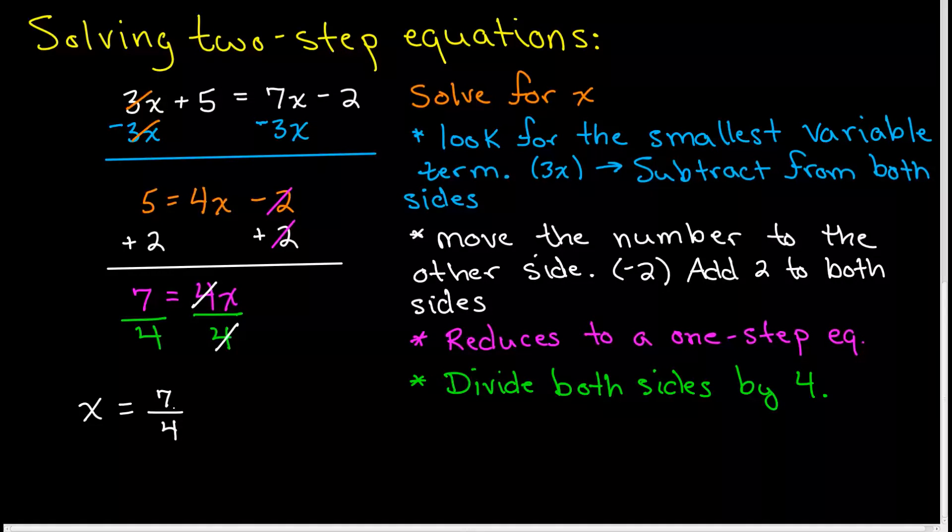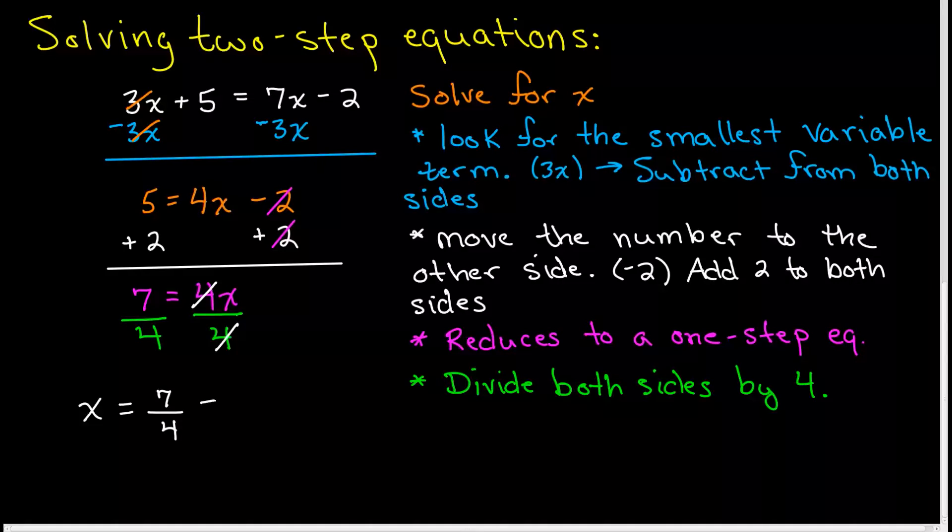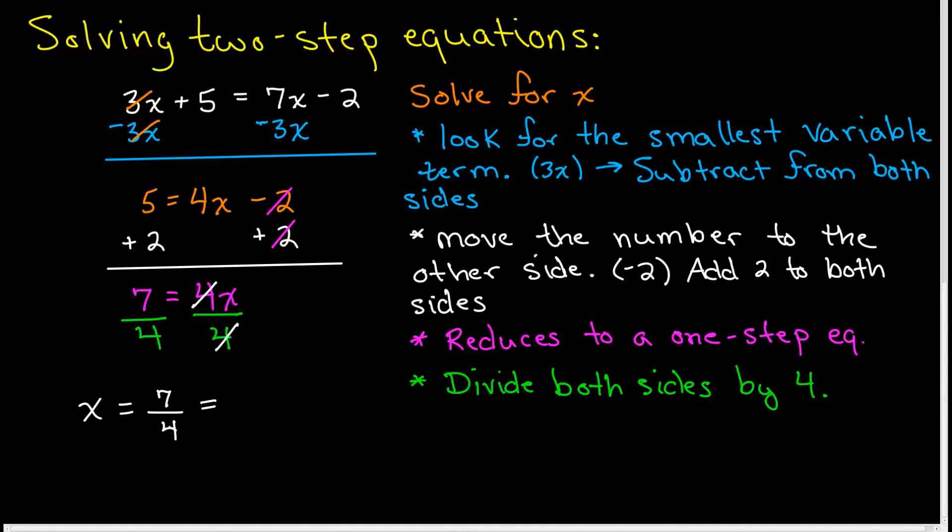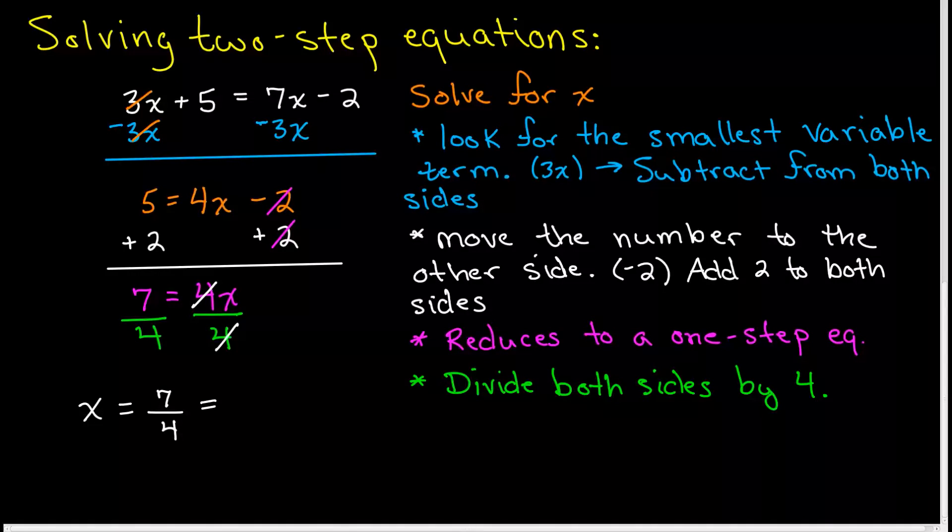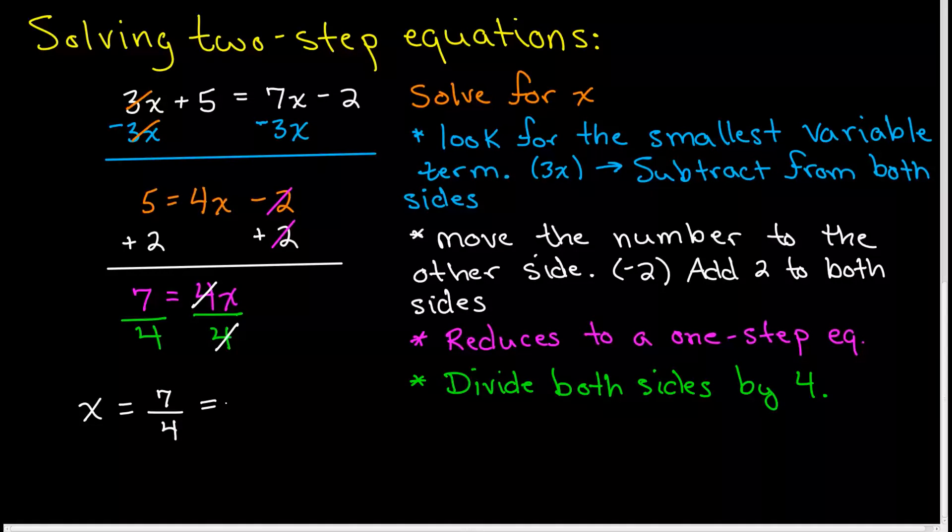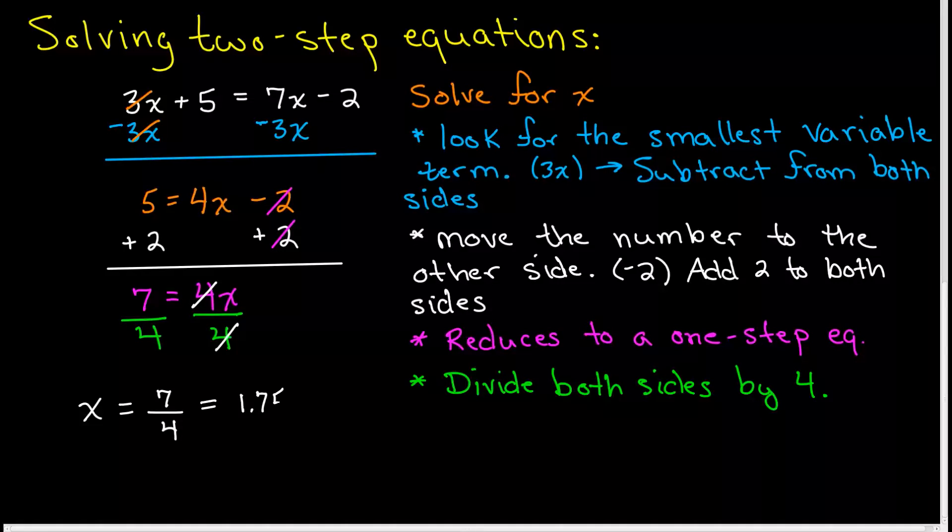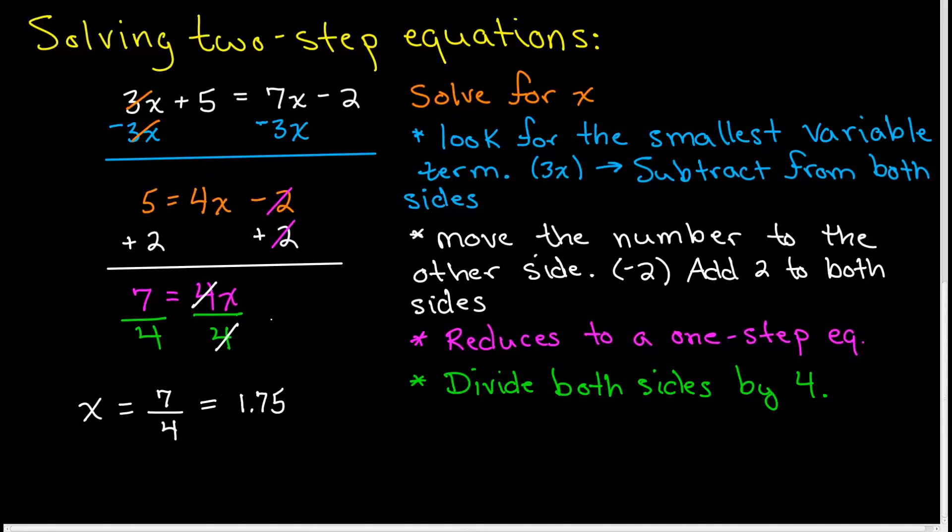We're done. Since this fraction won't reduce, that is our answer. As a decimal, if you're curious, 7 divided by 4: 4 is .25, or 1 fourth is .25, so 7 times .25, I think that will give me 1.75. I hope you enjoyed the video. We'll be back for more.